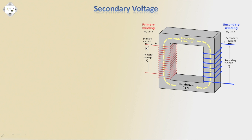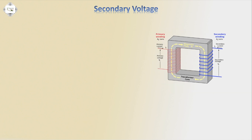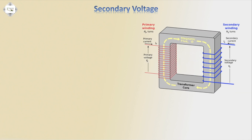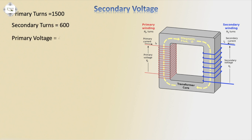A transformer has two sides: primary and secondary. Each side has a different number of turns of coil, and every turn has a voltage. Here, the primary winding turn N1 is equal to 1500, the secondary turn N2 is 600, and the primary voltage V1 is 440 volts. We need to calculate the secondary voltage and volts per turn.